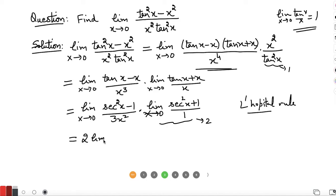So what we have is 2 times limit as x tends to 0 of secant squared x minus 1 over 3x squared. Again, a 0 by 0 form, so by L'Hôpital's rule again, it is equal to 2 times limit x approaching 0, derivative of numerator which is 2 secant x times secant x tan x, and derivative of 1 is 0, divided by derivative of 3x squared, which is 6x.